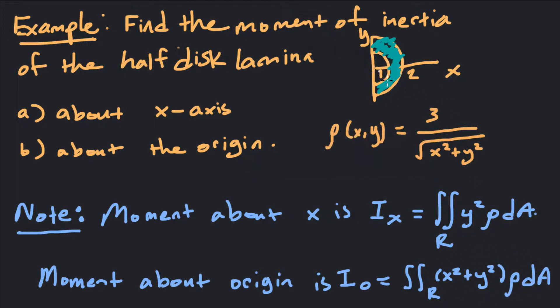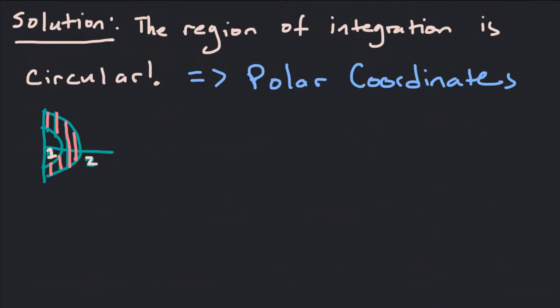How is the mass distributed as far as our distance away from the origin? First, we need to look at the region of integration so we can get the bounds for our double integral. The region of integration is circular, which implies we need to use polar coordinates. If we have the x-axis and the y-axis, our radius is going to go from 1 to 2 for every angle that we have, so r goes from 1 to 2.